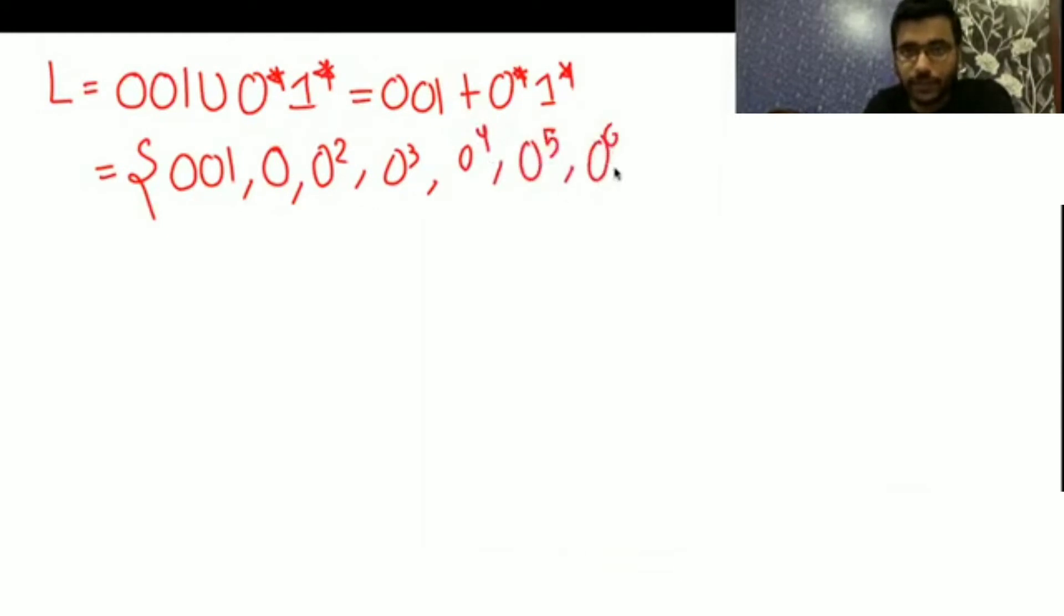Then when 0* will generate epsilon, you get here 11, 12, 13, 14, 15 like this. Then any number of zeros followed by any number of ones: 01, 02, 01. The 02, 01 is already here, no need to write that double.